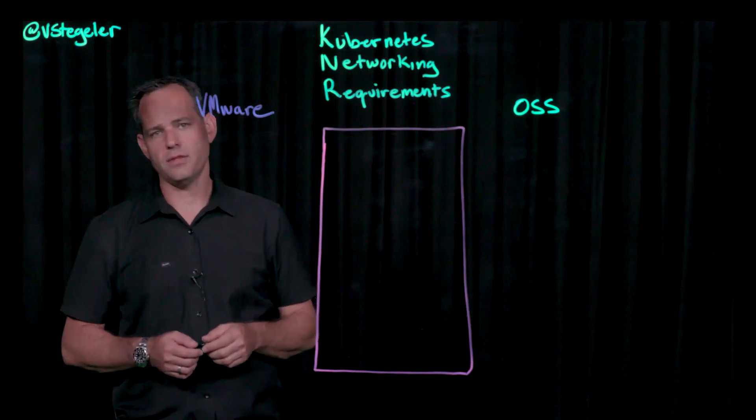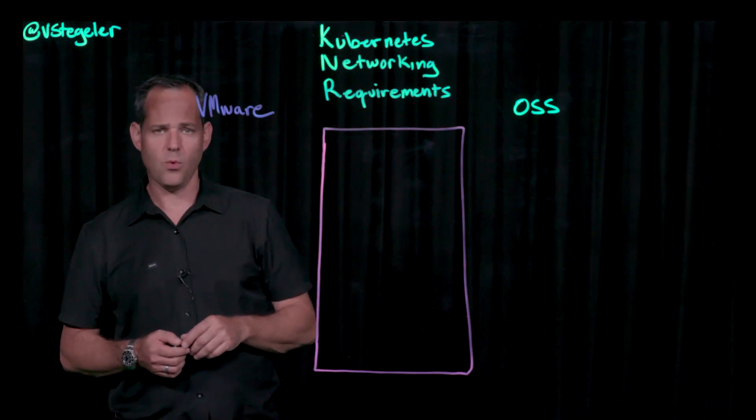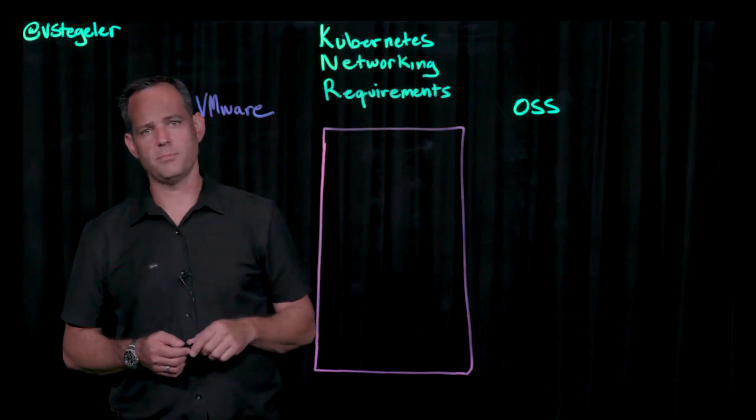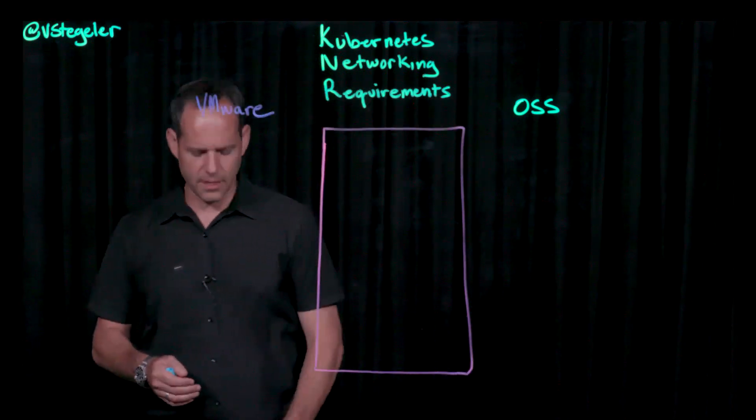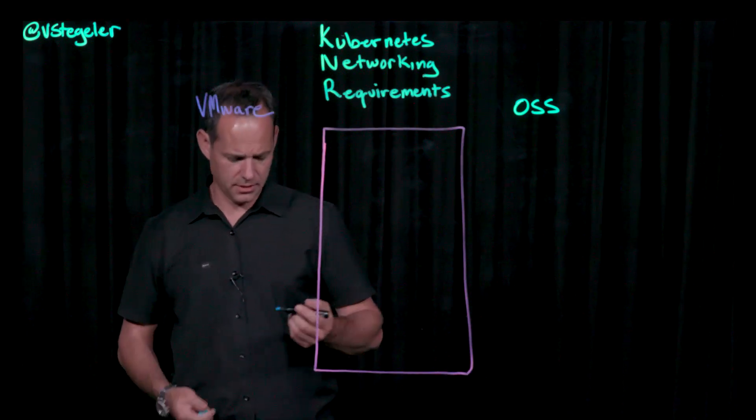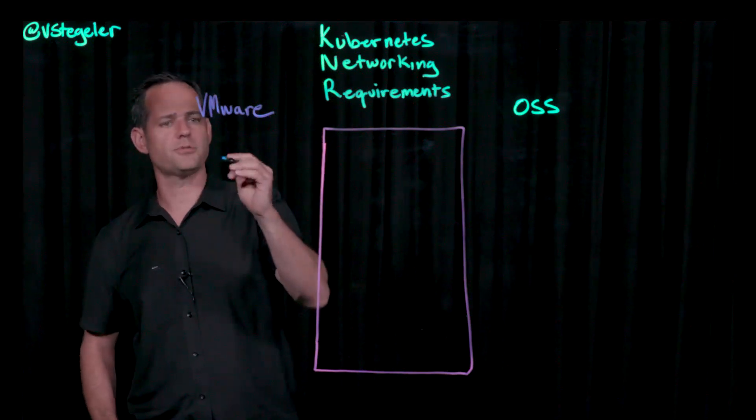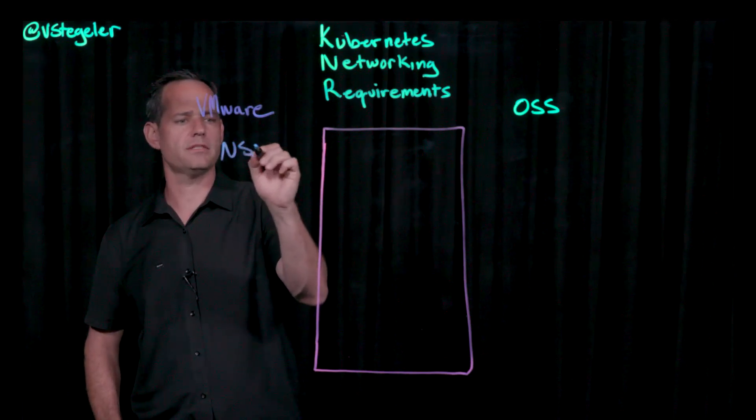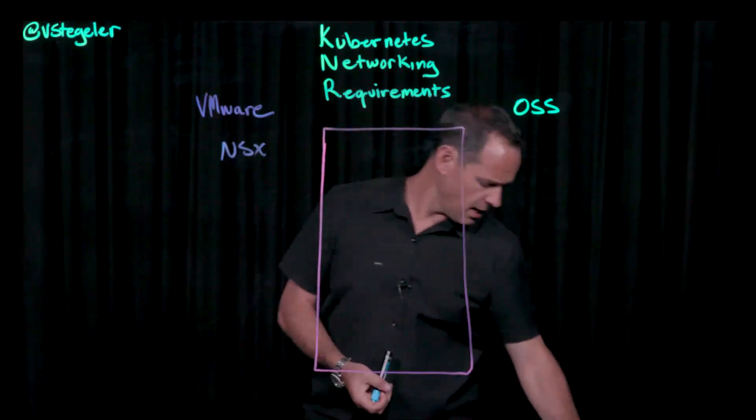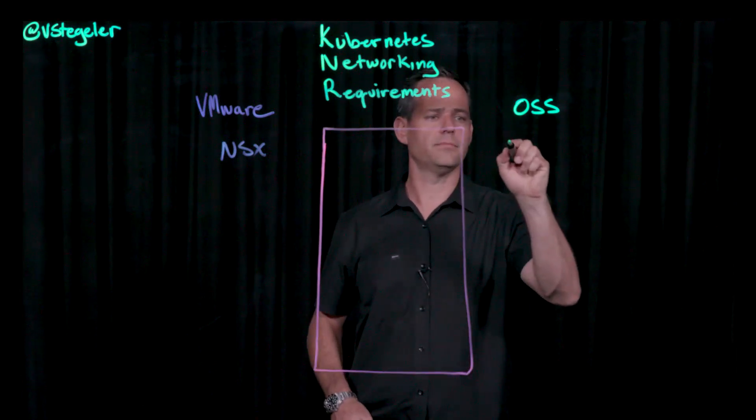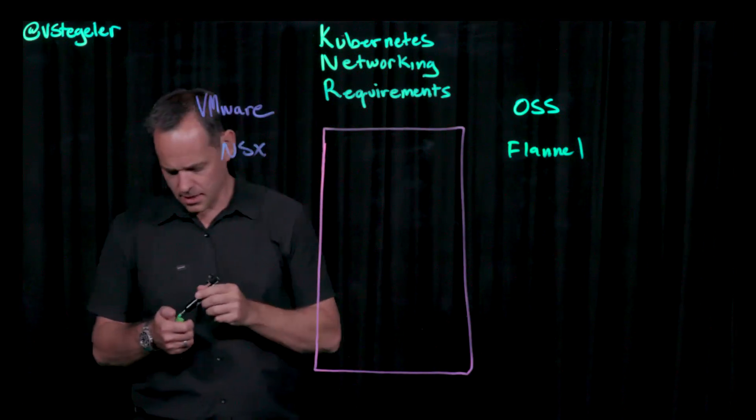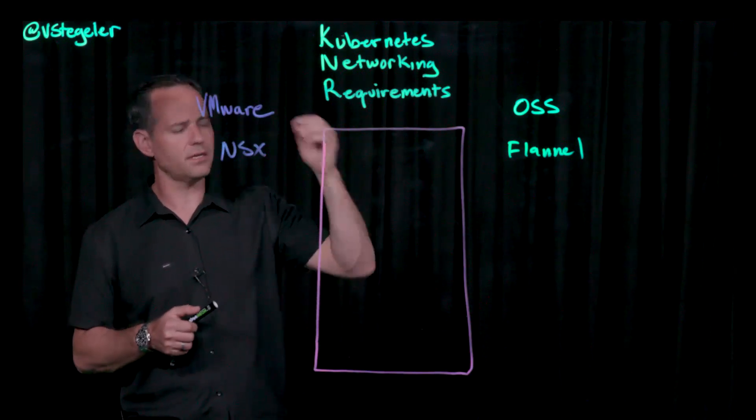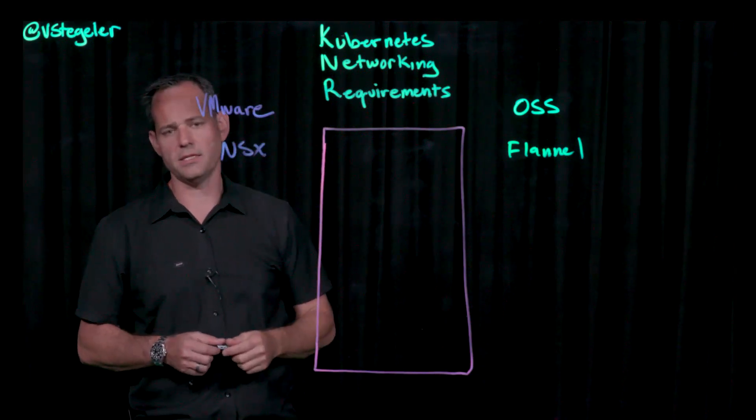And then I'm going to compare that with the potential VMware way of providing a networking solution here. A lot of times what some will do is they'll take a look at the two different options and say, is it either NSX or is it a technology called Flannel. And that basically is kind of the de facto networking with Kubernetes today.